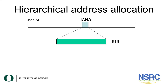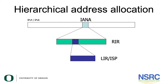IANA allocates address space to each regional internet registry. The regional internet registries, in turn, are responsible for assignment in their designated territory's local internet registries, such as the internet service providers. These service providers then allocate address space to the end users. The end users can also request address space directly from the regional internet registry, if needed, to ensure that they are service provider independent.